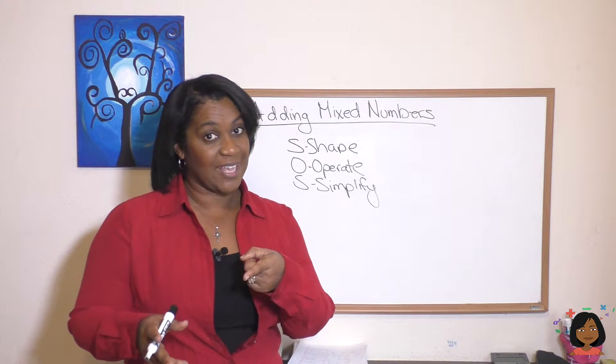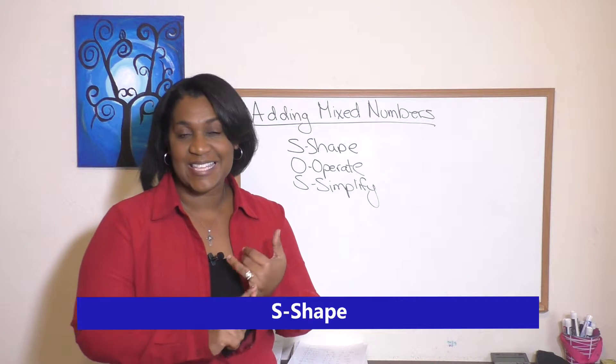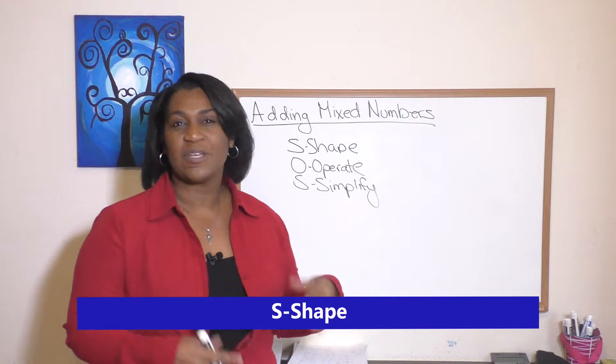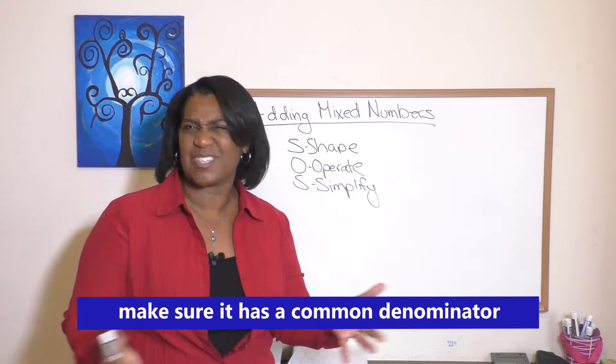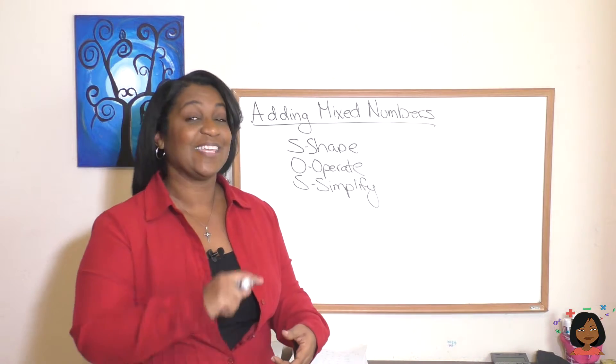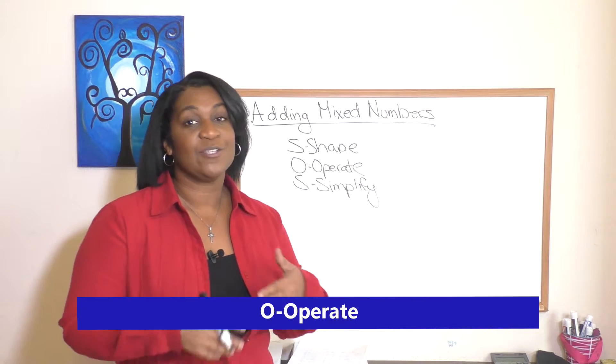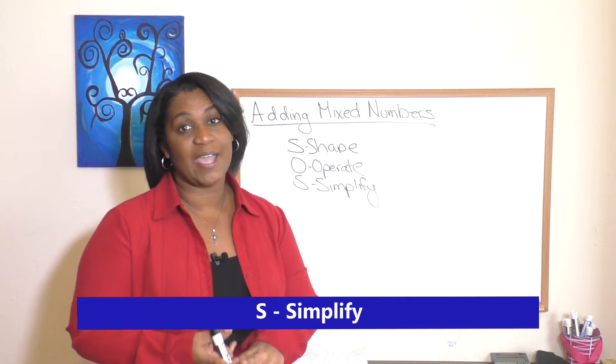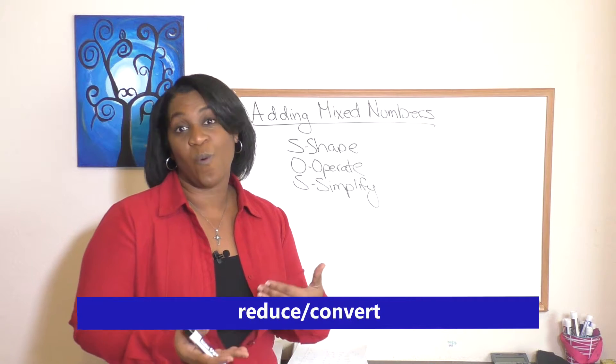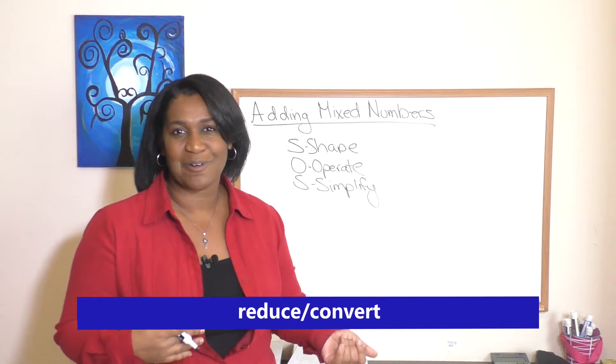Do you remember what that is? The S stands for shape. Shape means make sure it has a common denominator so you can work with it. It's got to be speaking the same language, right? The O stands for operate. Do your addition in this case and then simplify. We either need to reduce or convert our number.